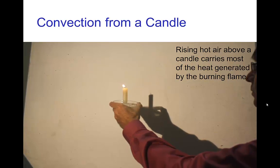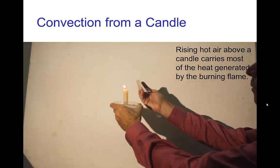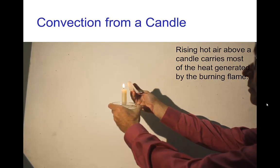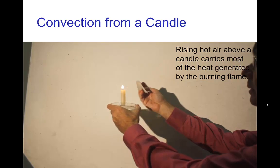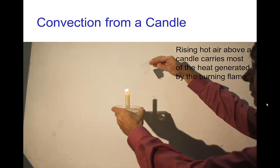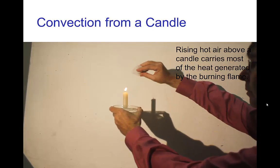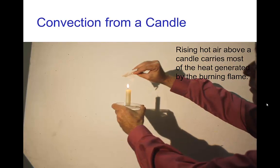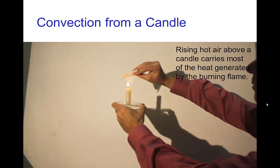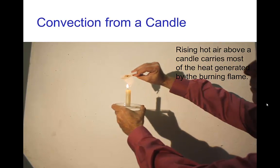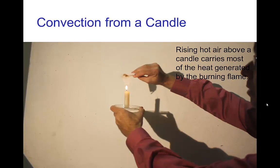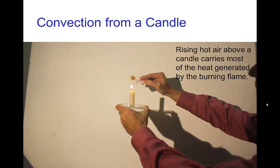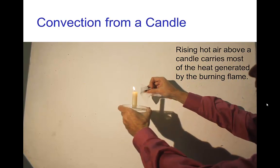If I take a little piece of paper and put it on the side, not much happens because all the energy is rising straight up. But if I put the piece of paper above the candle, it starts heating up and starts to be scorched by that very hot current of air rising from the candle.